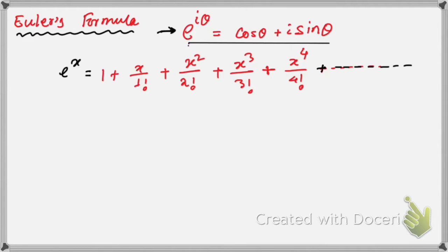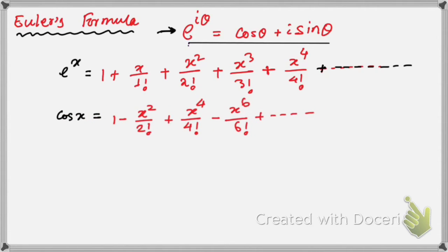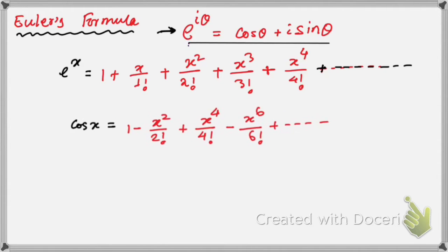The next result is: cos x is equal to 1 minus x squared by factorial 2 plus x to the power 4 by factorial 4 minus x to the power 6 by factorial 6, and so on.